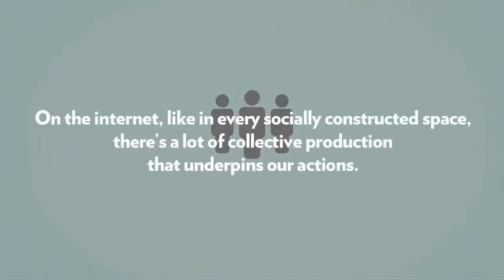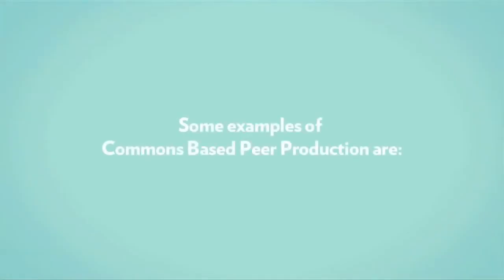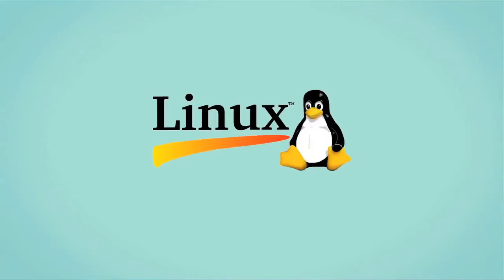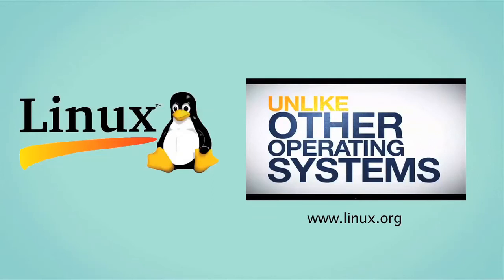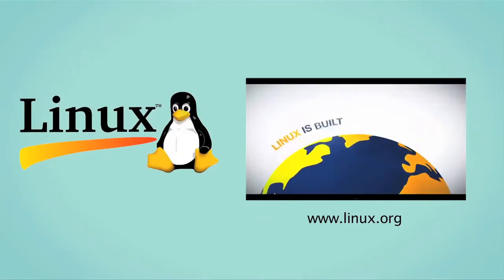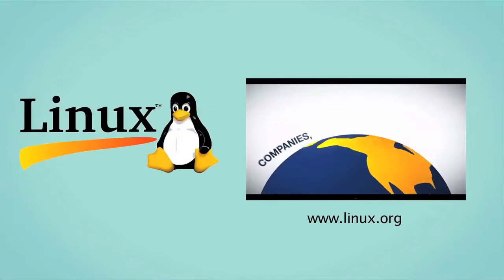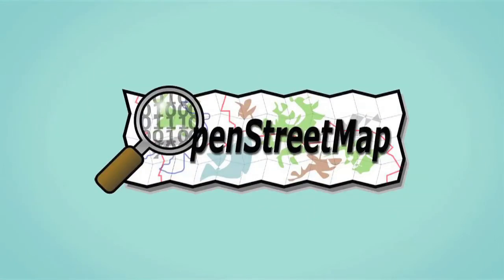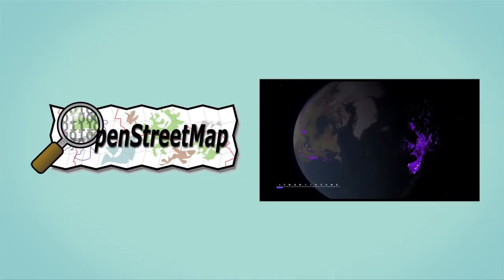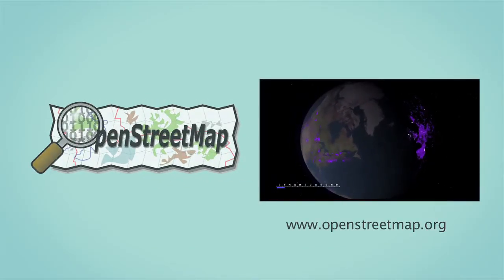On the internet, like in every socially constructed space, there's a lot of collective production that underpins our actions. Some examples of commons-based peer production are Linux, an open and free operating system, an alternative to Microsoft Windows and Apple's operating systems — Linux servers make up the backbone of the Internet. Collaborative writing platforms like Wikipedia, the most important encyclopedia collectively produced. OpenStreetMaps, a map of the world created by people like you and free to use under an open license.